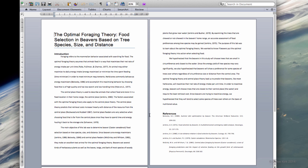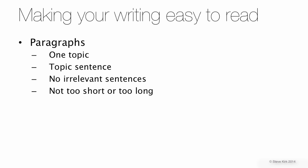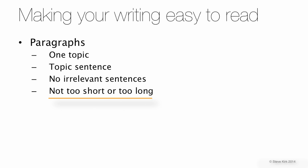You can easily see the paragraphs — here's one, here's another, here's the third one, and here's the last one. Basically, these are the rules for writing clear paragraphs: you should have one topic per paragraph, paragraphs should start with a topic sentence, you should have no irrelevant sentences, and they should not be too long or too short.